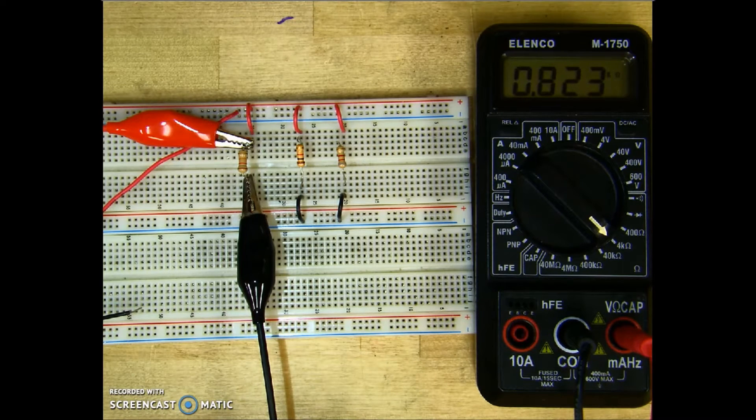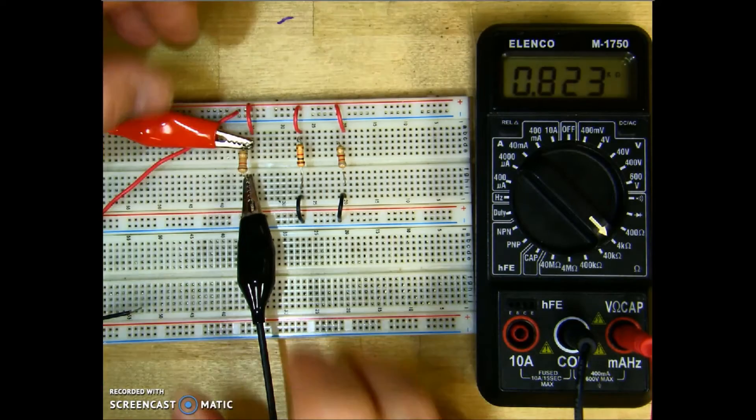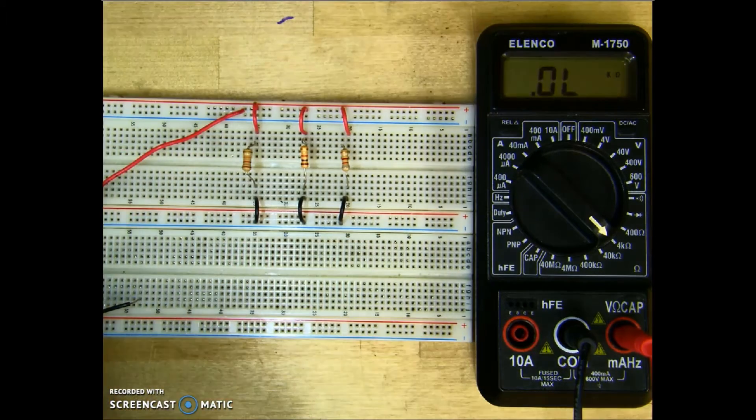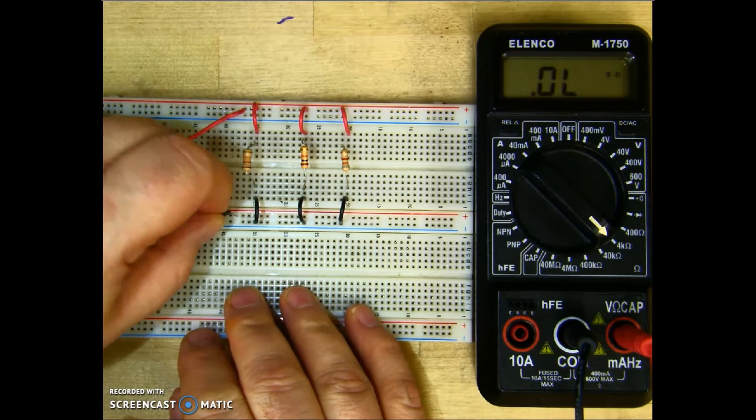And I will turn my meter down. And R total for this circuit is 823 ohms. Through my calculations, that is correct. So I'll go ahead and put my source back in.